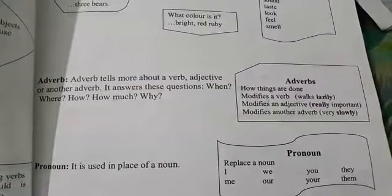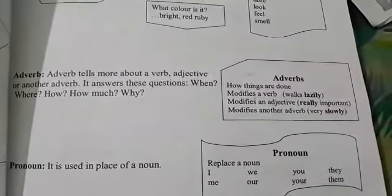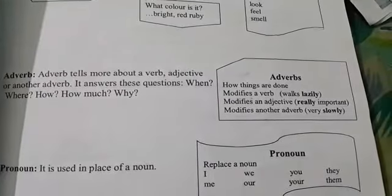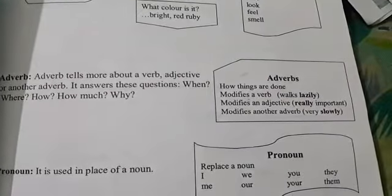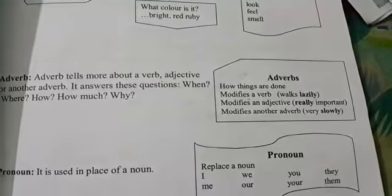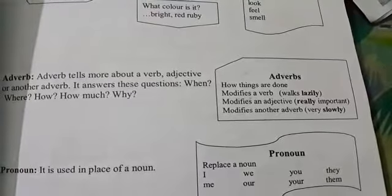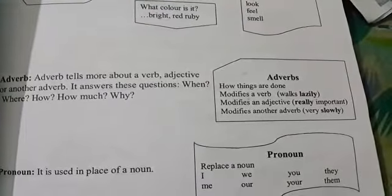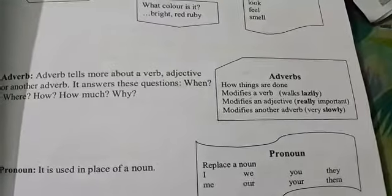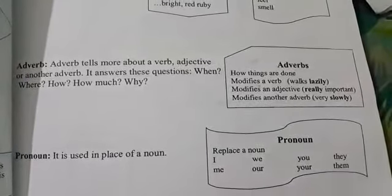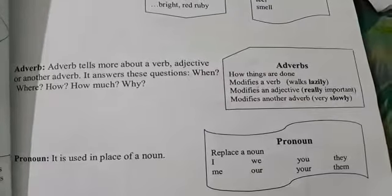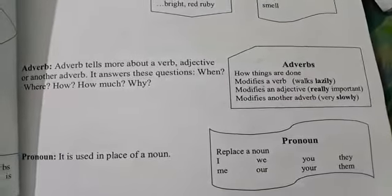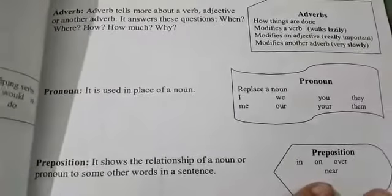Adverb tells how things are done. It can modify a verb — for example, walk lazily. It can modify an adjective — really important. And it can modify another adverb — very slowly. So: walk lazily, really important, very slowly.